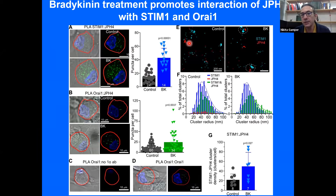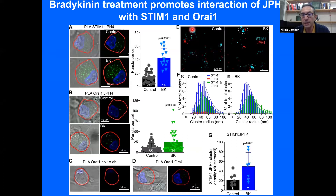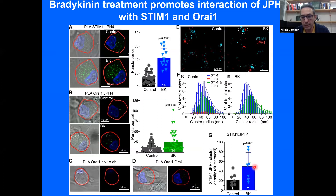The same result was obtained with STORM — stochastic optical reconstruction microscopy — a truly single-molecule super-resolution technique where each punctum represents a single molecule localization of either STIM1 or JPH4. Clusters already exist between these two proteins at baseline, but after bradykinin stimulation these clusters become more prominent and more frequently found.